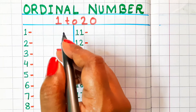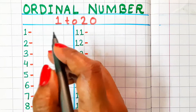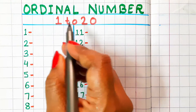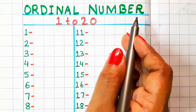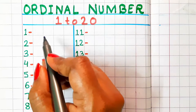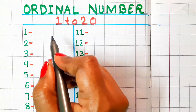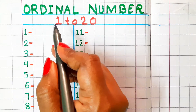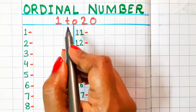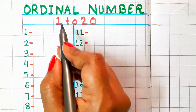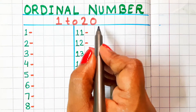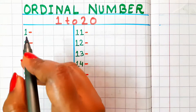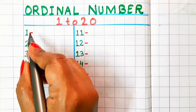Welcome to channel Simply Easy Learning. In today's video, we are going to learn ordinal numbers from 1 to 20. We will learn the spelling of ordinal numbers and what these numbers are called in ordinal. So, let's begin.